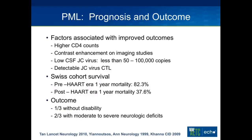Regarding prognosis, among HIV patients, factors associated with improved outcomes include higher CD4 counts, contrast enhancement on imaging studies, a low JC virus load detected in the CSF (less than 100,000 copies), and a detectable JC virus cytotoxic T-cell response. Outcomes in the Swiss cohort in the pre-HAART era showed one-year mortality of 82%, compared to only 37% in the post-HAART era. Of those who survive, a third will be completely normal and two-thirds will be left with some neurologic deficits, sometimes quite severe.